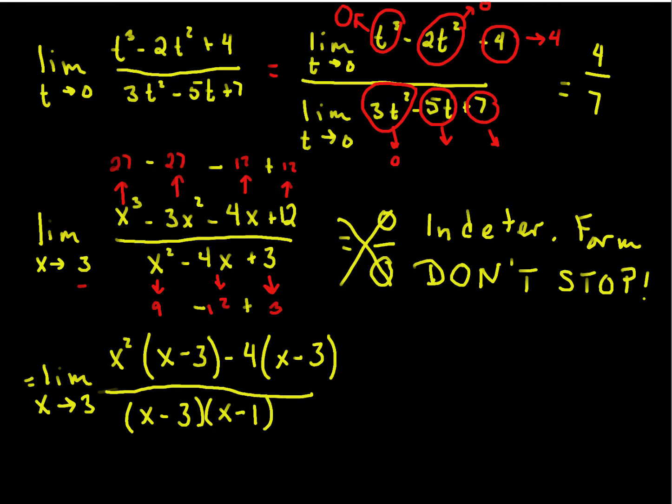And now, that's a good sign, because check it out. I've got a common term of x minus 3 on both sides here, and an x minus 3 on the bottom. So, they cancel, which is what I'm always looking for when I've got indeterminate form. I've got indeterminate form. I want to look for canceling, and I got it.